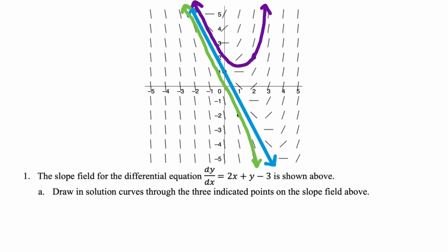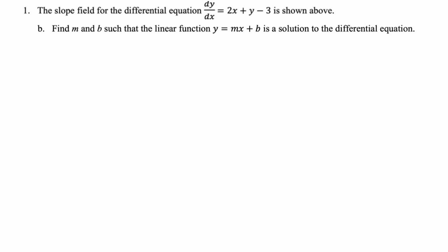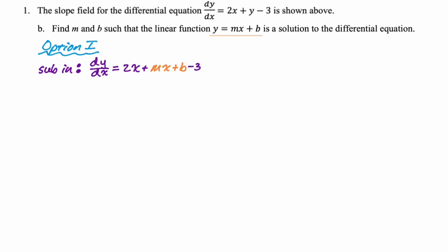Let's take a look at the next part. Find m and b such that the linear function y equals mx plus b is a solution to the differential equation. There are three viable approaches. Option one: substitute y = mx + b into the equation. dy/dx equals 2x plus y minus 3. Substituting y gives dy/dx equals 2x plus mx plus b minus 3, which we rearrange as dy/dx equals (2 + m)x plus (b - 3).